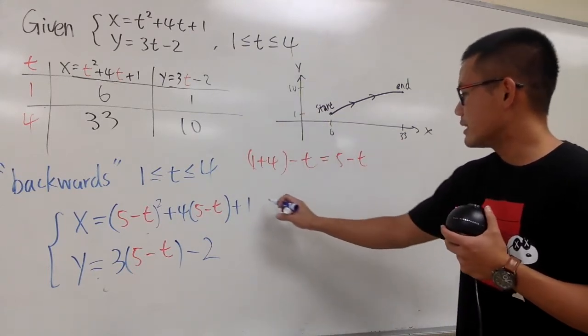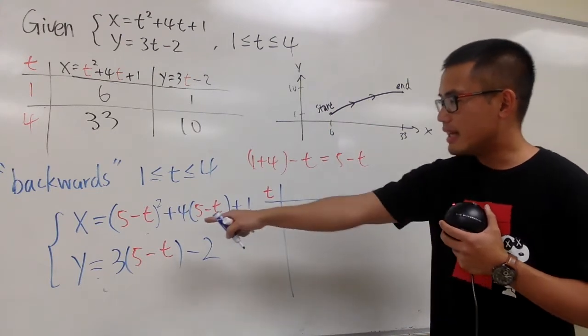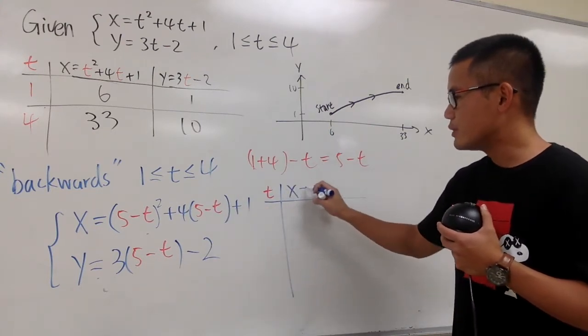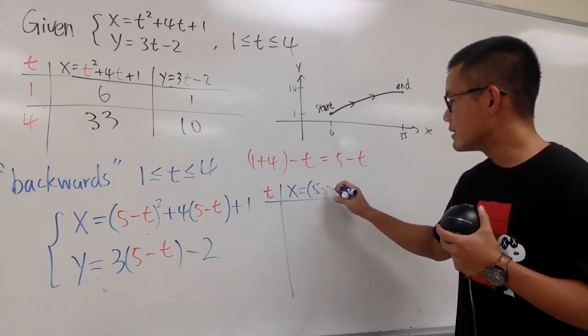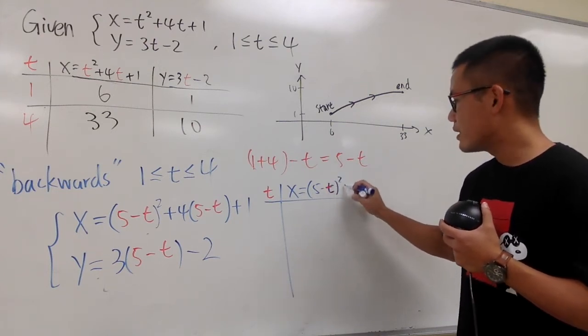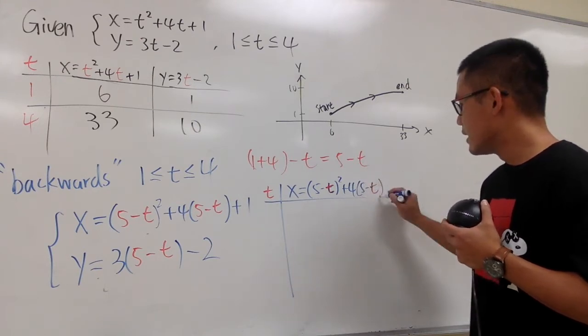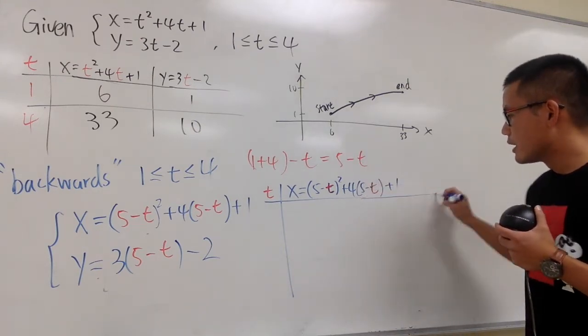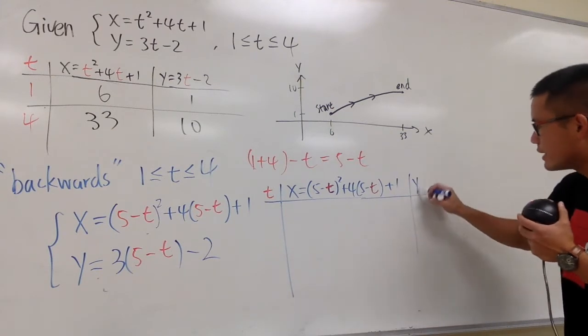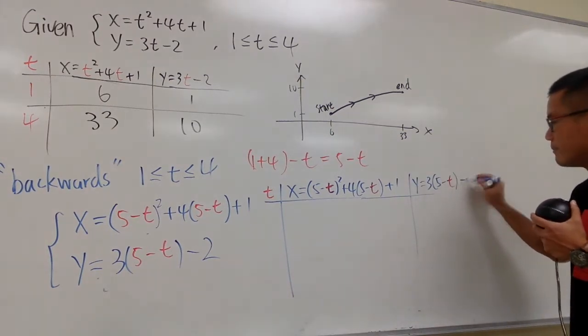So with that being said, once again, we have the t right here. This time the x is that. So we have the x equation, which is 5 minus t square plus 4, 5 minus t, and then plus 1. And then we still have the y equation, y is equal to 3 times 5 minus t, and then minus 2.